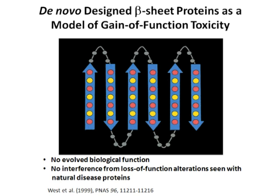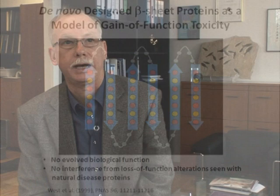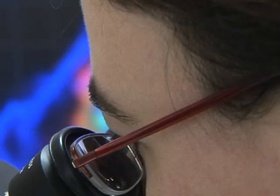We used model proteins that were designed to form beta-sheet fibrils. These proteins were developed by our collaborator Michael Hecht from Princeton. They are based on the redundant structural pattern of beta strands — the sequence of polar and apolar amino acid residues. We chose these artificial proteins because they have no evolved biological function, and thus allowed us to study aggregate toxicity without interference from loss-of-function effects that one often observes with natural disease proteins.